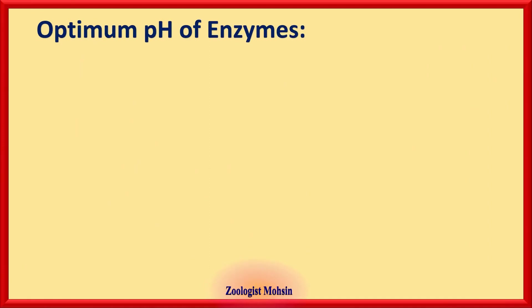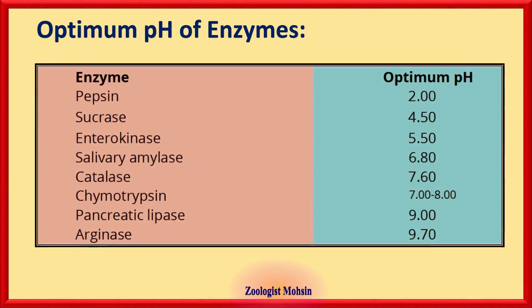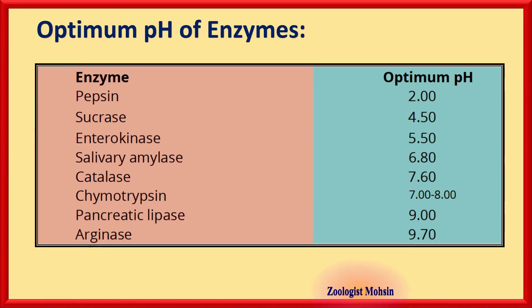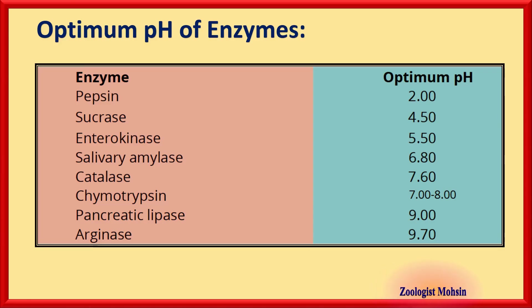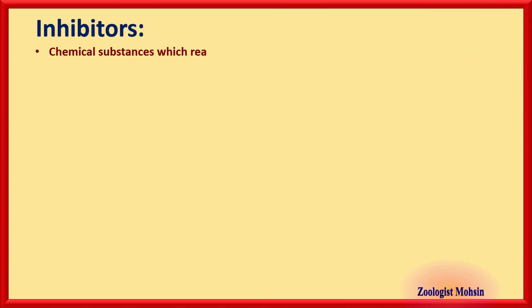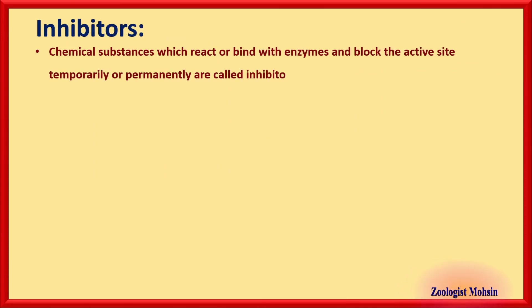A table showing different optimum pH values for different enzymes is important to memorize, especially enterokinase, catalase, chymotrypsin, and arginase, as these values have been asked in past papers.